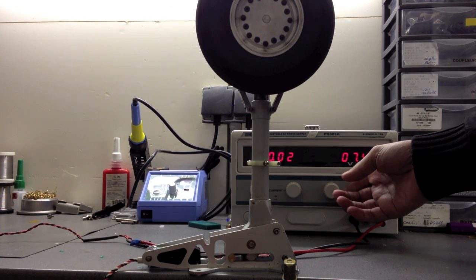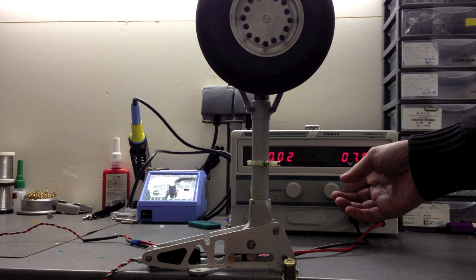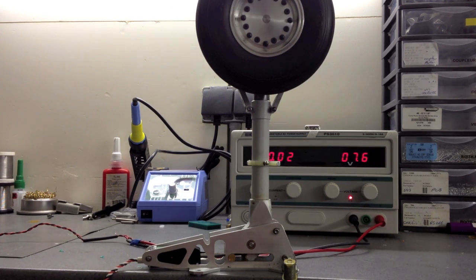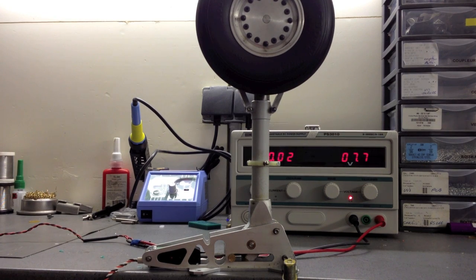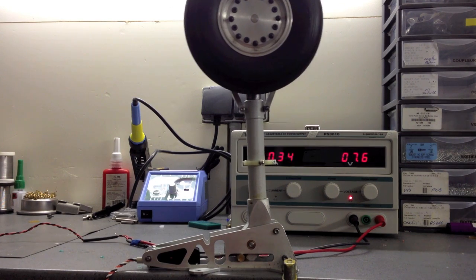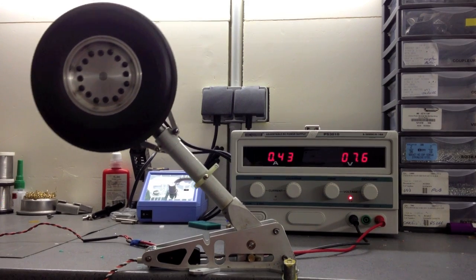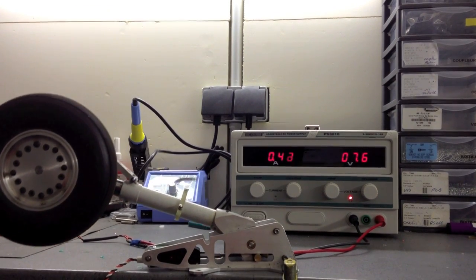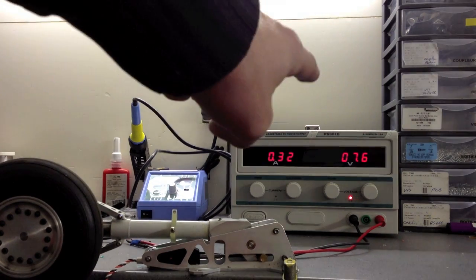at 7.6 volts, like if we use 2S LiPos, because our retract can be supplied with 2S LiPos without any problem. So you can go up to 8.4 volts. You see the consumption is very low.